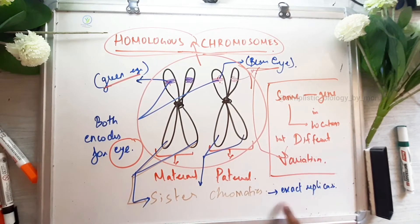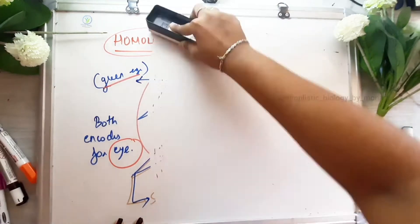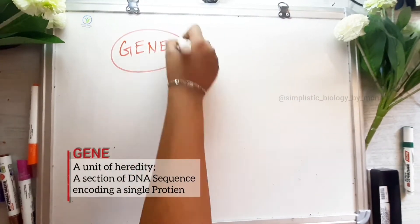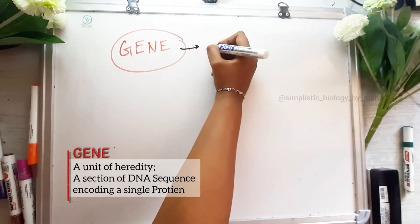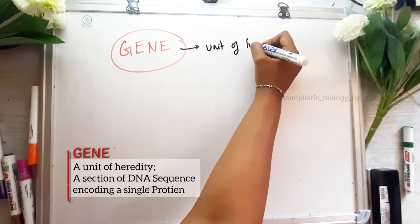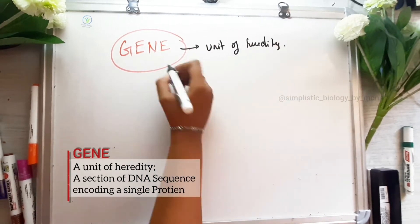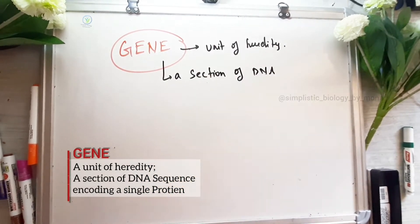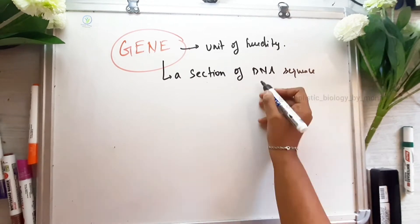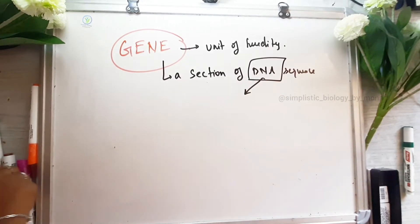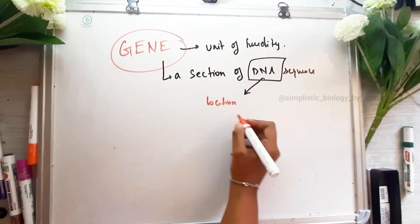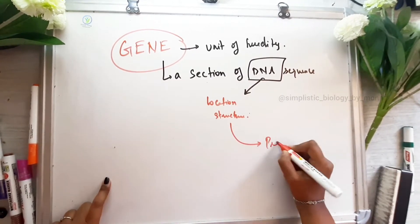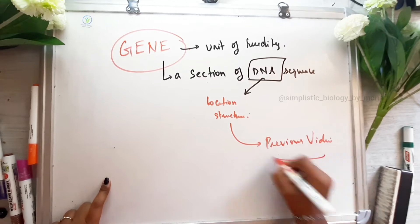A gene is a section of DNA sequence. The DNA sequence refers to the location and structure of the gene.